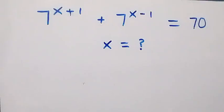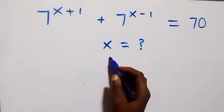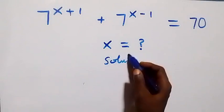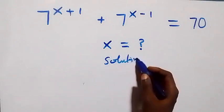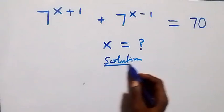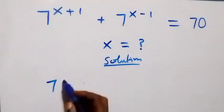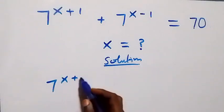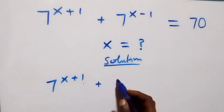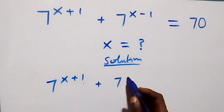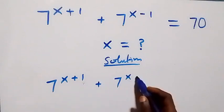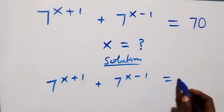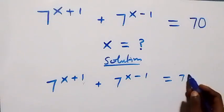Hello, you are welcome. How to solve this nice exponential equation. We are given seven raised to power x plus one, then plus seven raised to power x minus one, equals to 70.